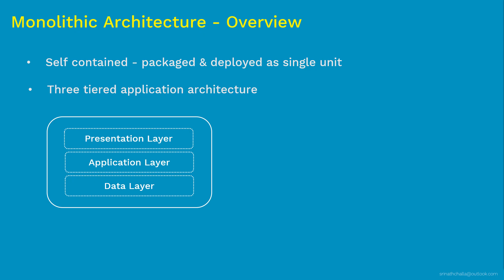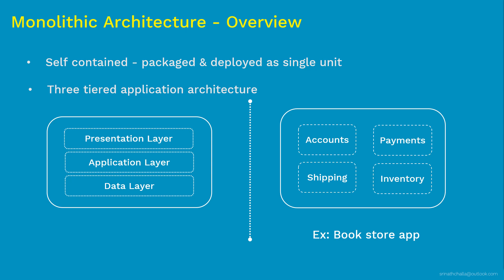That's a high-level overview of the monolithic architecture and its tiers. All these layers are packaged and deployed together as one single unit, and that is one of the main reasons why it is called monolithic architecture. As a simple example, a bookstore web app primarily consists of four components: customer accounts, payments, inventory, and shipping. If a developer builds this application based on monolithic architecture, all four components are developed together, likely interdependent, and deployed onto a web server as one single unit.